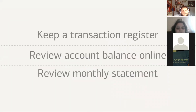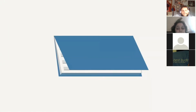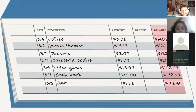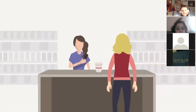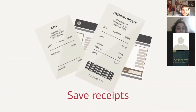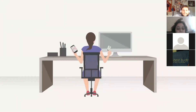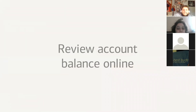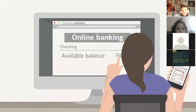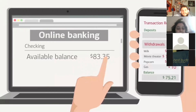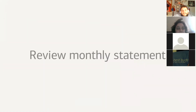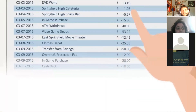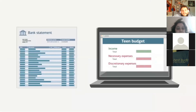Encourage your child to keep track of her account and check her balance regularly. If she doesn't, she might not realize the rate at which she's spending, which could lead to bounced checks, overdraft penalties, declined transactions, or minimum balance fees. Suggest that she keep a transaction register — some checkbooks include these booklets to record deposits and withdrawals. If she has a smartphone, a checking app can make keeping a transaction register easier. Encourage her to save receipts from store purchases and ATM withdrawals.